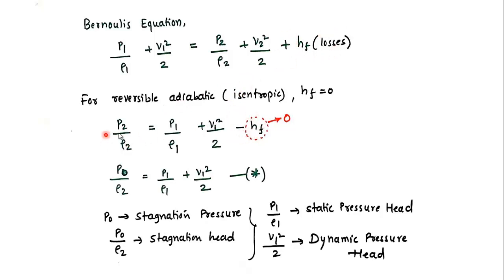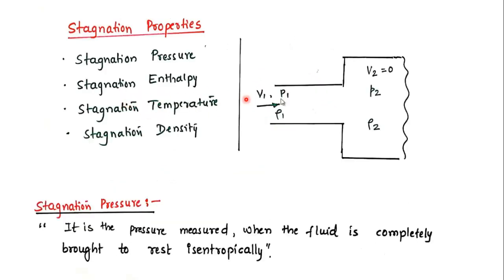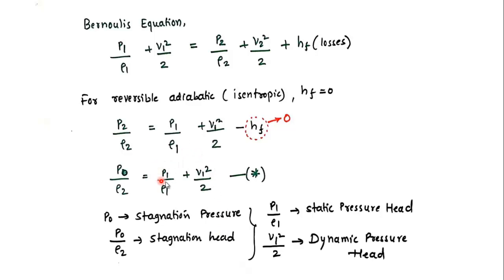If hf is present, the pressure p2 will be lower than the theoretical maximum. If we eliminate hf (isentropic process), all the energy at state 1 is converted into pressure energy at state 2. With losses, some energy is wasted. Therefore, we define stagnation pressure as the pressure measured when the fluid is brought to rest isentropically, because only then do we achieve the maximum pressure.